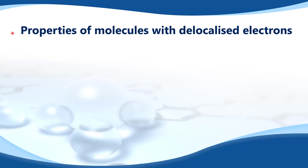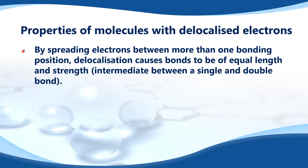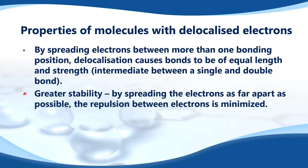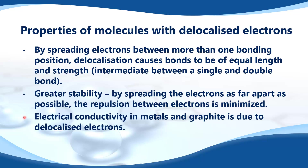Finally, we look at the properties of molecules with delocalized electrons. By spreading electrons between more than one bonding position, delocalization causes bonds to be of equal length and strength, intermediate between a single and a double bond. It also gives the molecule greater stability by spreading the electrons as far apart as possible, minimizing repulsion between electrons. Finally, electrical conductivity in metals and graphite is due to delocalized electrons.